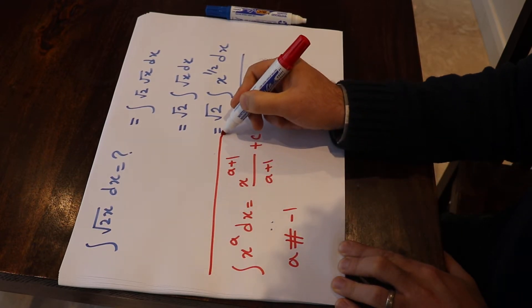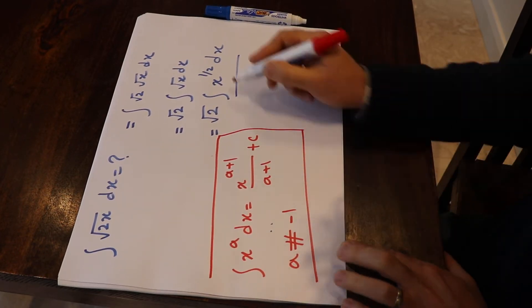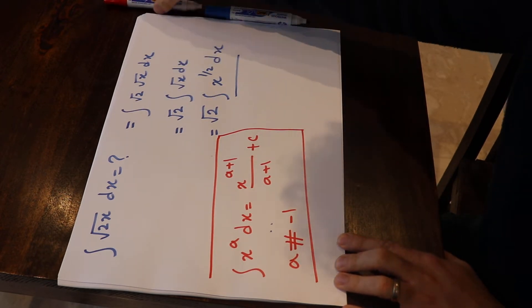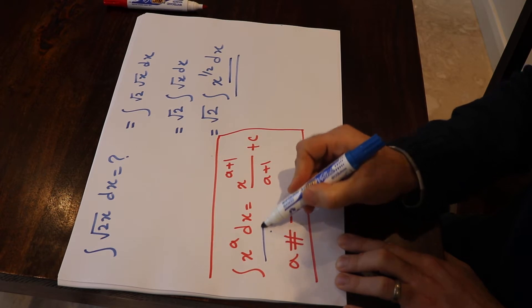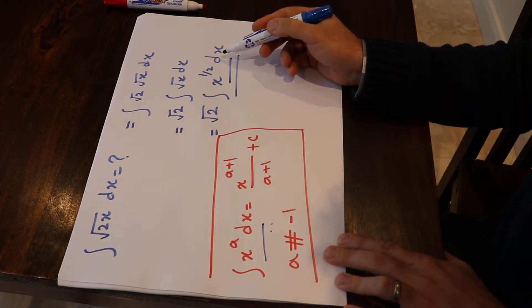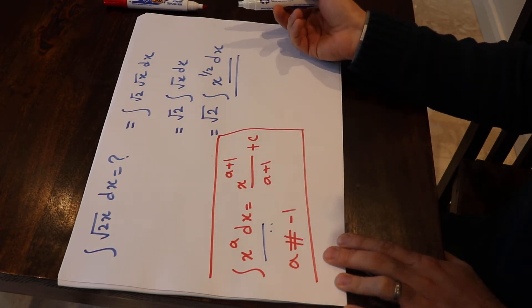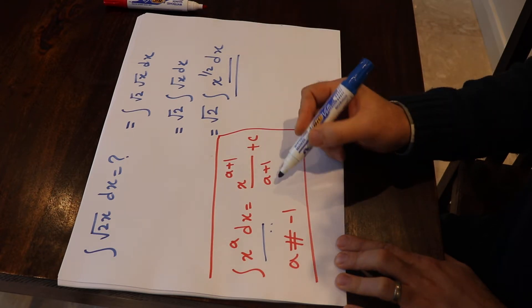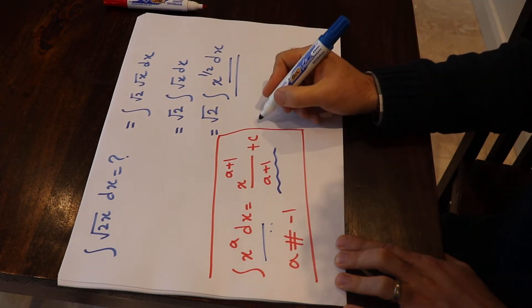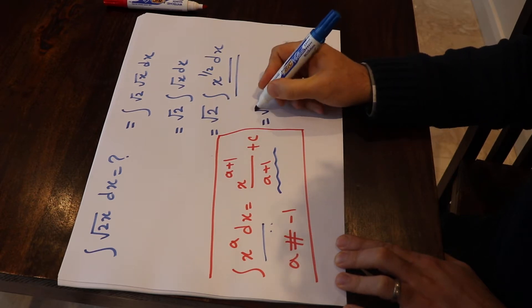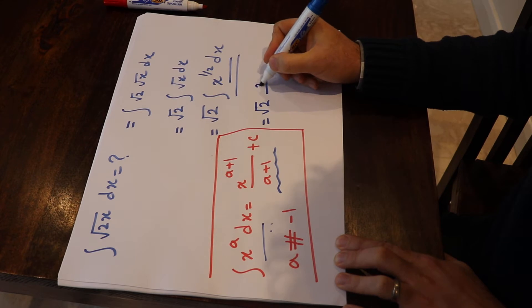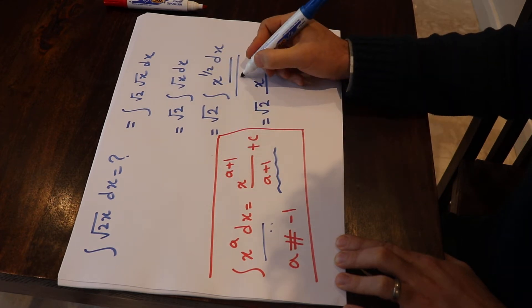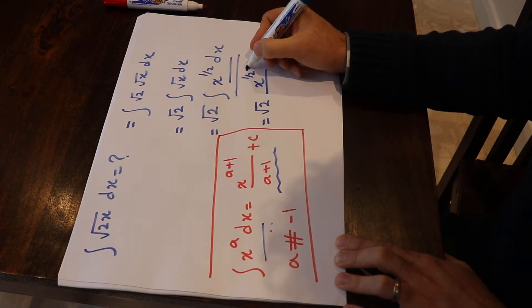So using this formula, you can solve this integral because if you compare this integral with this one, you see they have the same format and in this case a = 1/2. Therefore, you can use this solution to solve this integral and that will be equal to √2 times x^(1/2 + 1),